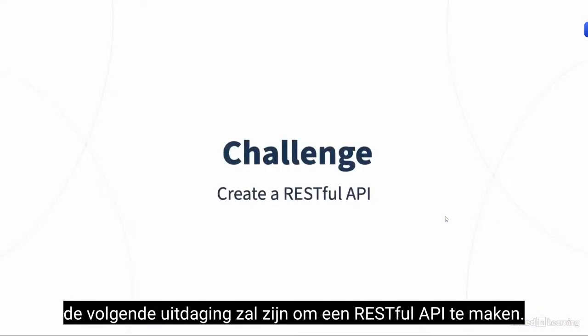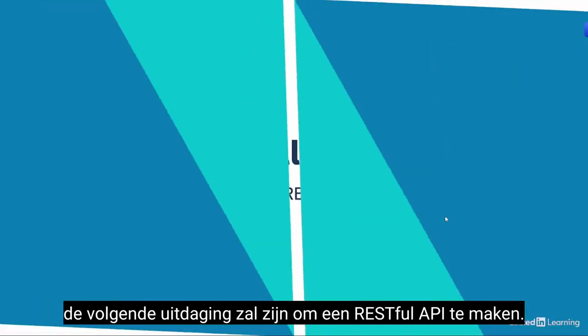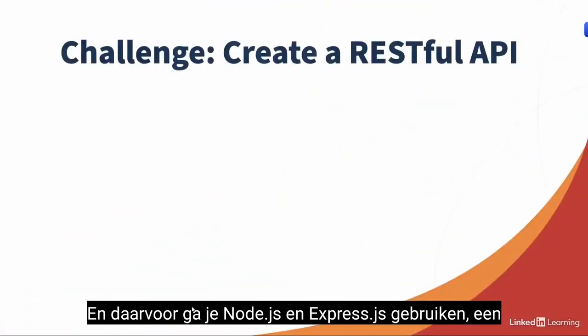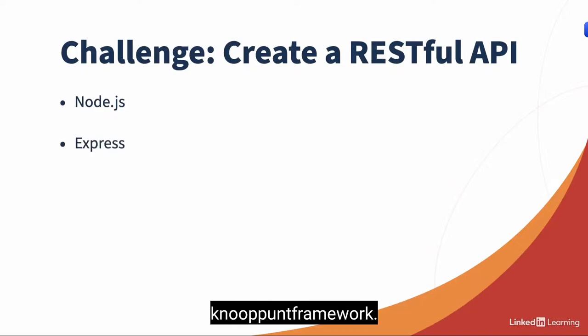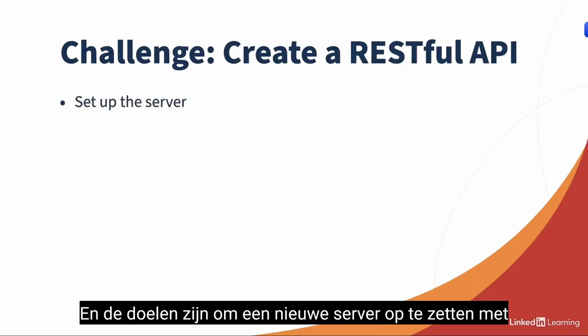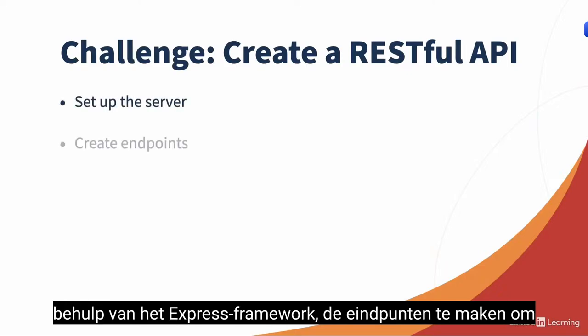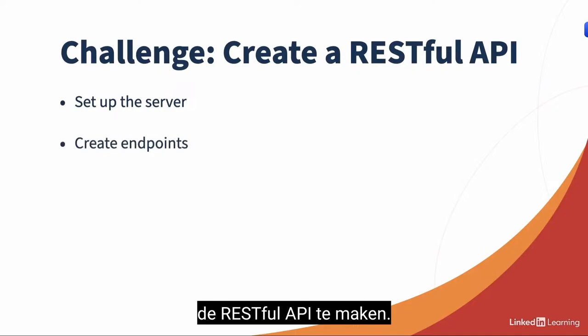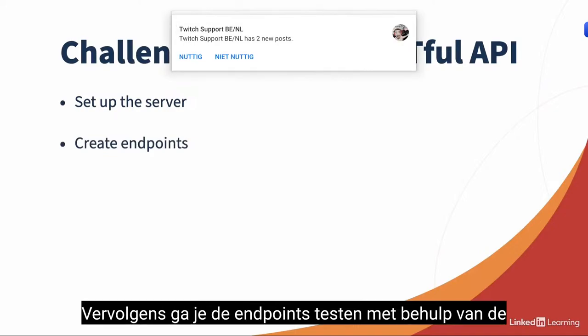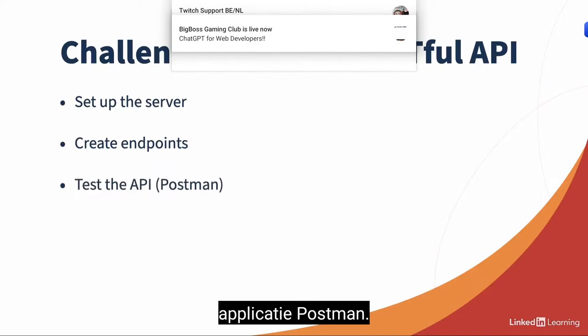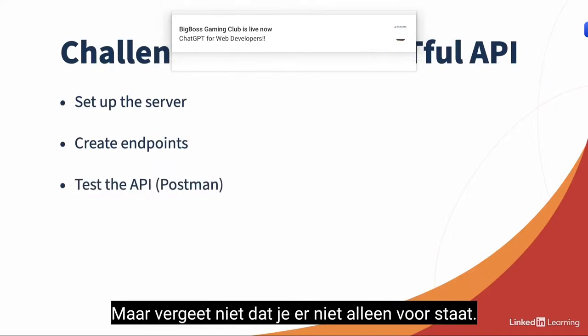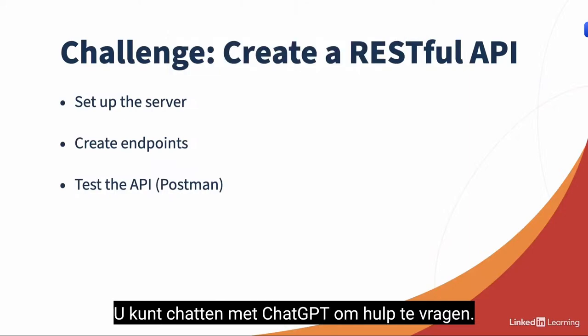The next project and challenge will be to create a RESTful API using Node.js and Express.js, which is a Node framework. The goals are to set up a new server using the Express framework, create the endpoints for the RESTful API, and then test the endpoints using the application Postman. Now this is your turn — but remember you're not alone; you can chat with ChatGPT to ask for help.